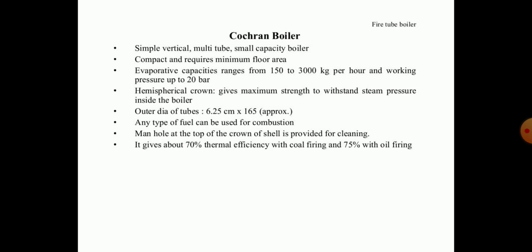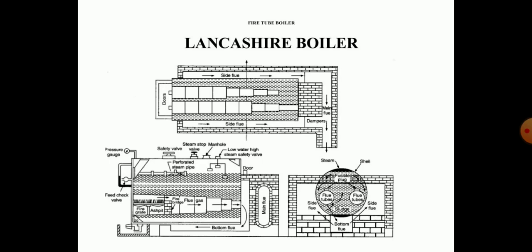The outer diameter of the tubes is approximately 6.25 cm. Any type of fuel can be used for combustion, and a manhole at the top of the crown of the shell is provided for cleaning. It gives about 70% thermal efficiency with coal firing.